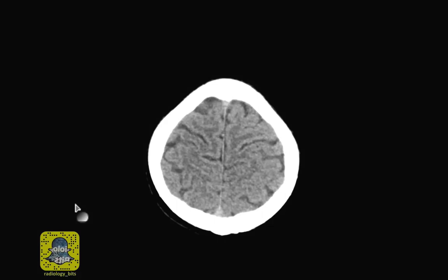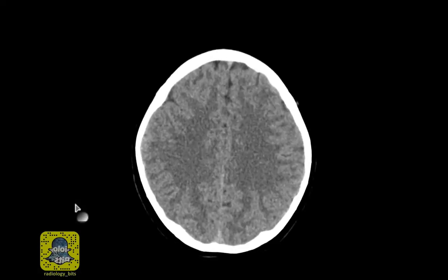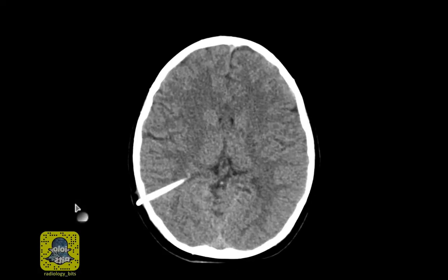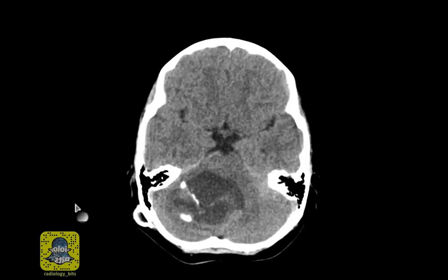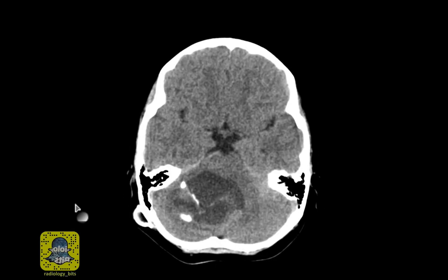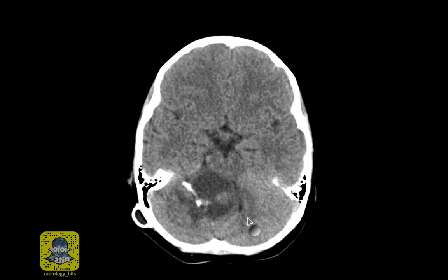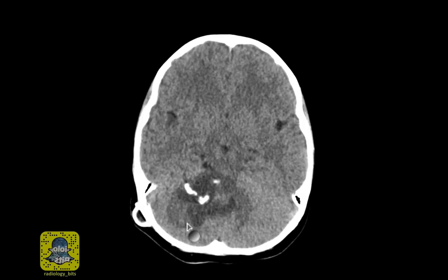This is the answer and discussion on interactive case number two on this 12-year-old male patient. The CT scan without intravenous contrast administration demonstrates a very heterogeneous and sizable lesion in the right posterior fossa. The lesion displaces the surrounding soft tissues and compresses the fourth ventricle.